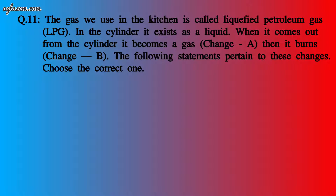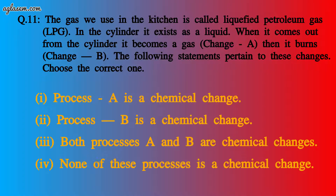Question 11: The gas used in the kitchen is LPG (liquefied petroleum gas). In the cylinder it exists as a liquid. When it comes out of the cylinder, it becomes a gas — Change A. Then it burns — Change B. Choose the correct statement: 1) Process A is a chemical change. 2) Process B is a chemical change. 3) Both A and B are chemical changes. 4) None is a chemical change. The correct answer is 2 — Process B is a chemical change.